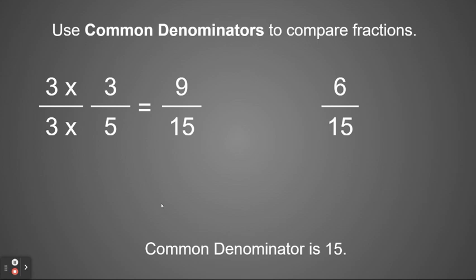So that was similar to what we did in our previous lesson. Today, though, we're going to be comparing those. So now that my denominators are the same, I'm going to compare my numerators. 9 fifteenths is greater than 6 fifteenths.